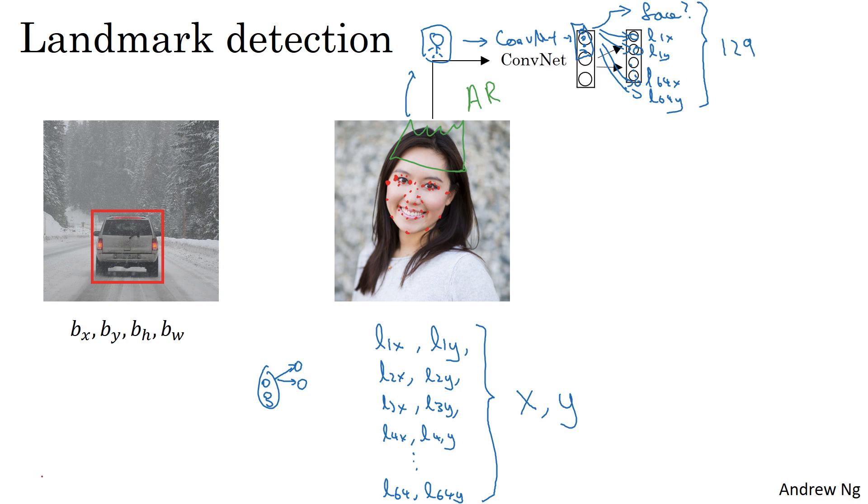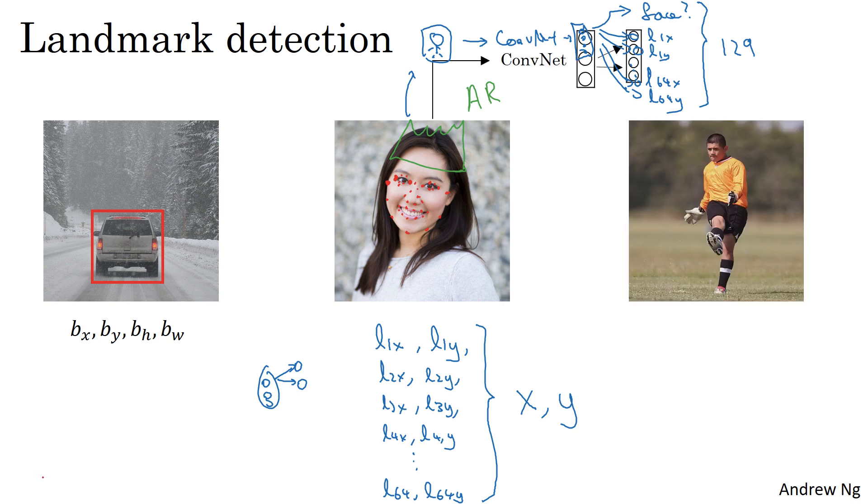One last example: if you are interested in people pose detection, you could also define a few key positions like the midpoint of the chest, the left shoulder, left elbow, the wrist, and so on, and just have a neural network annotate key positions in the person's pose as well. And by having a neural network output all of those points that I'm annotating, you could also have the neural network output the pose of the person.